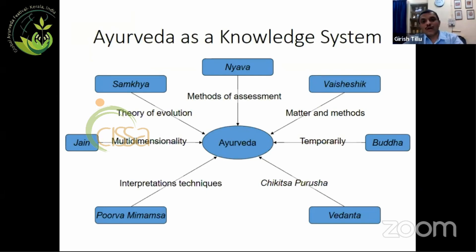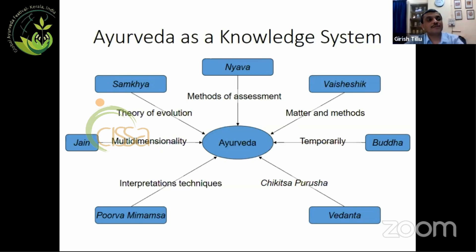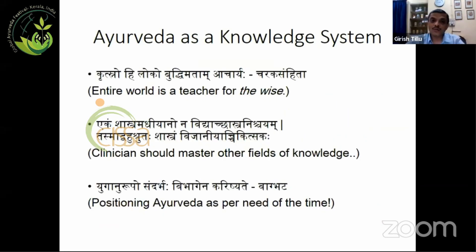We all know that Ayurveda is a knowledge system. The depth and beauty of Ayurveda is it has borrowed important methods, approaches, methods of study, outlook, and worldviews from diverse knowledge domains, and it's still continuing. For example, if we study important landmarks in the history of Ayurveda, say the development of Rasa Shastra — it's not just adapting new views or thoughts, but new research methods as well. Ayurveda is a very interesting and open knowledge system.